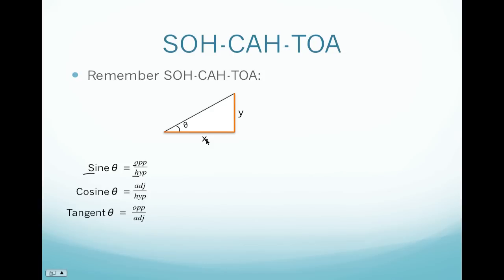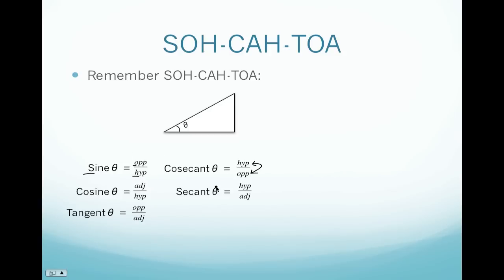Now we're going to learn three new trig functions, but they're not really new — they're actually just reciprocals. So our first one is cosecant. Cosecant is just like sine, except it's flipped. Cosecant actually equals 1 over sine. Our next one is secant. Secant is the reciprocal of cosine, so if we take our cosine and flip that ratio, you're going to get secant theta. And lastly, cotangent of theta is the reciprocal of tangent of theta. So instead of opposite over adjacent for tangent, our cotangent is adjacent over opposite.